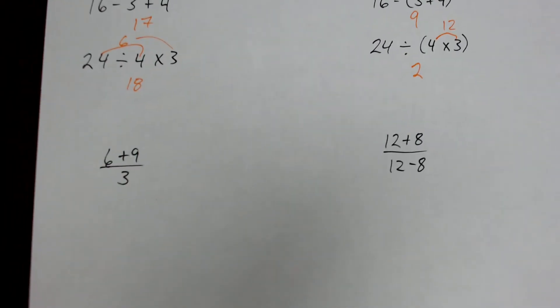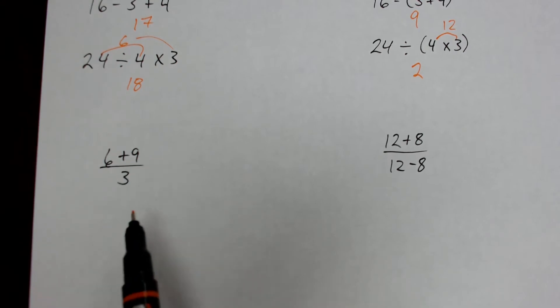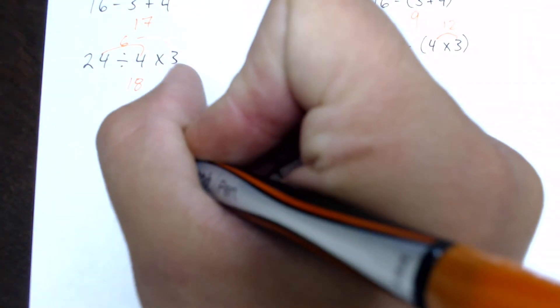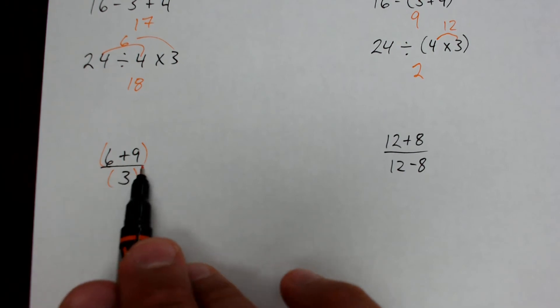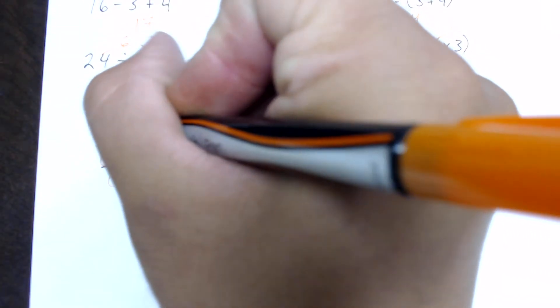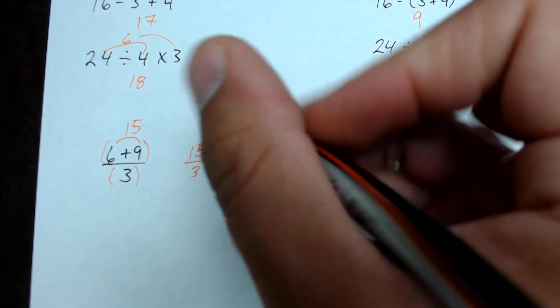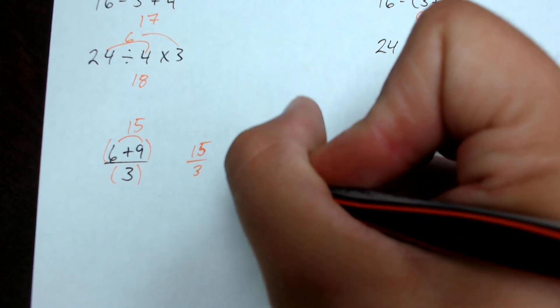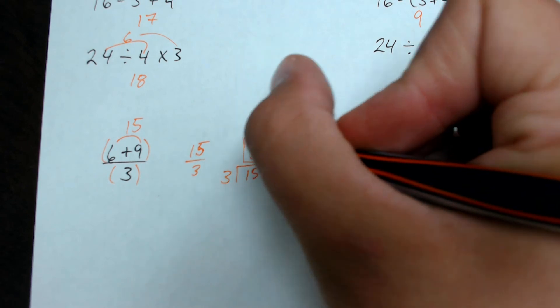Now, the last thing that you'll see is these problems set up as fractions. So if it's set up in a fraction, all I have to do is solve the numerator, solve the denominator, and then divide. So it's kind of like treating each part of the fraction like it has its own set of brackets or parentheses around it. So in this one, I will take 6 plus 9 first, which gives me 15. And then now what I have is 15 over 3, or 15 divided by 3, which gives me 5. So my final answer here is 5.